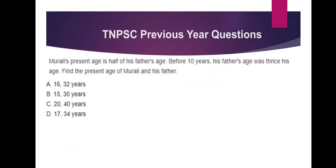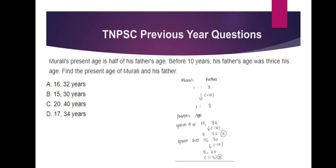Murali's age is half of his father's age — the ratio is 1 to 2. Before 10 years, his father's age was twice Murali's. The ratio is 1 to 3. Checking option A: 16 to 32 — if you check, the value is 22. Option B is 15 to 30. Checking: 5 to 20 gives a ratio of 1 to 4, which doesn't match 1 to 3.